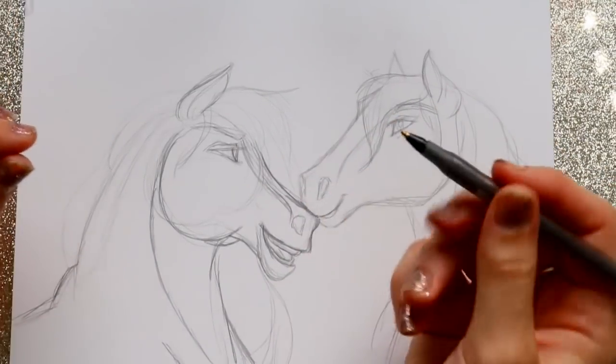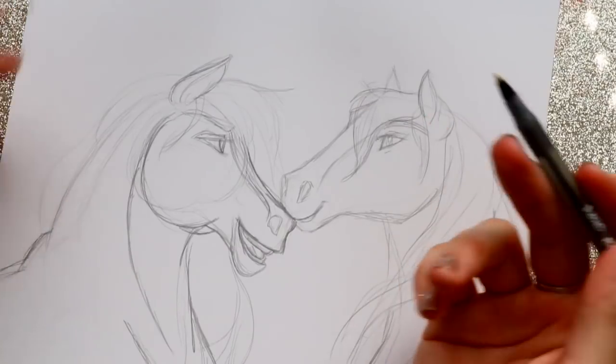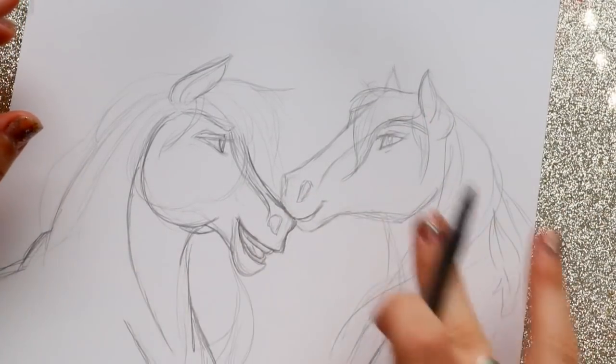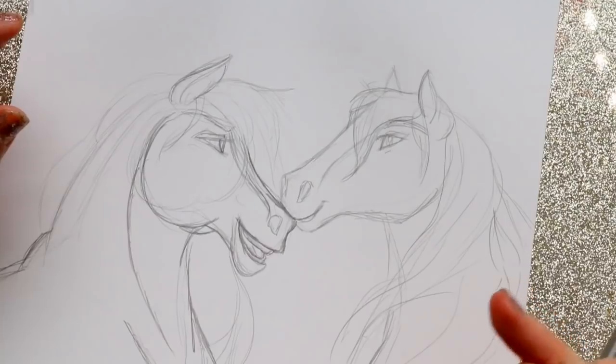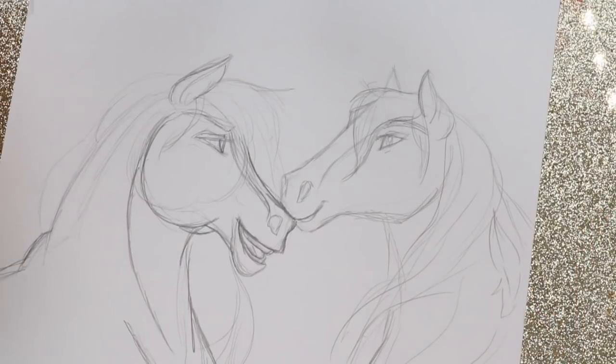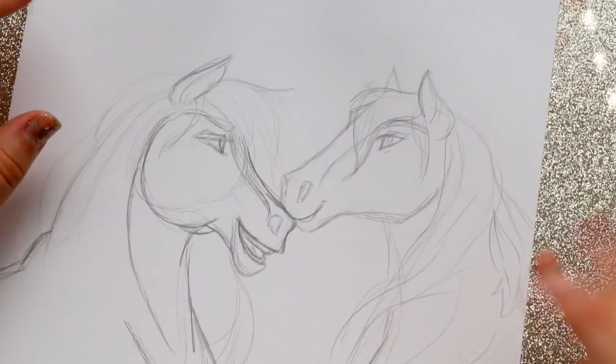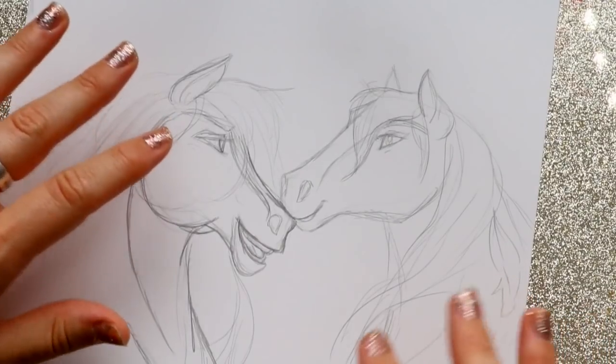So what I'm going to do with my regular Bic round stick pen, I'm going to go in and I'm going to line everything first, and then I'm going to start shading it with cross-hatching. But I'll talk to you in a second, I'm just going to go ahead and line. I sketched this out with a pencil, which is completely fine.